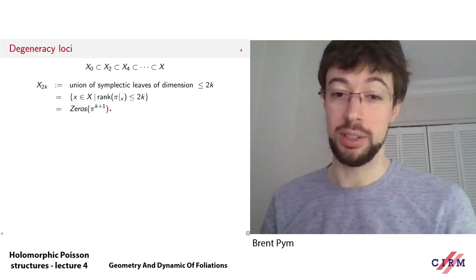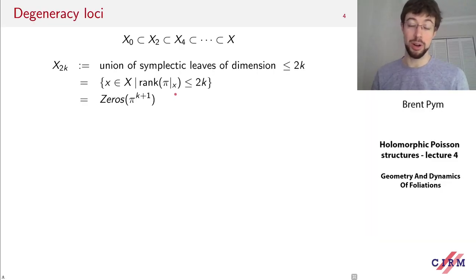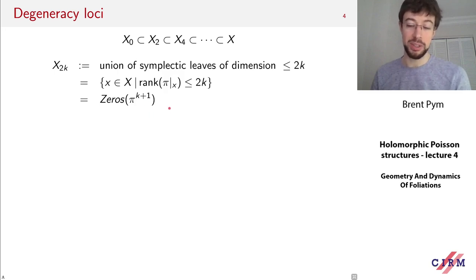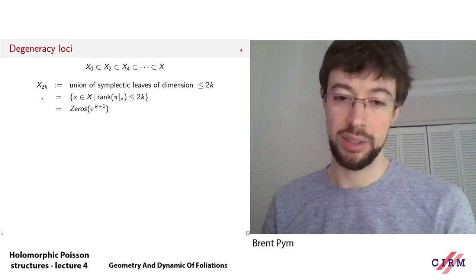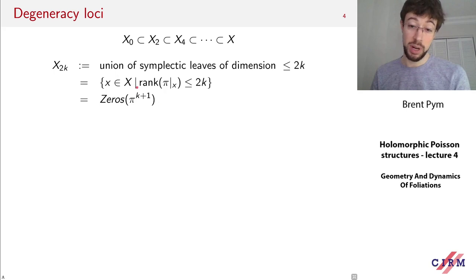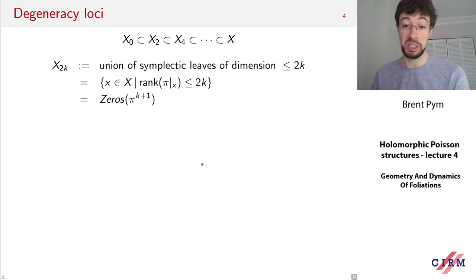We can determine the rank by calculating determinants of submatrices. When the dust settles, the locus X_{2K} is exactly the zero set of the K-plus-first exterior power of pi. The components of this tensor are essentially determinants of submatrices of pi in local coordinates. This shows X_{2K} is the zero set of a section of a vector bundle — a closed analytic subvariety in X. Moreover, this gives not just the fact that it's a closed analytic subvariety, but preferred defining equations, so it's properly defined as a subscheme.